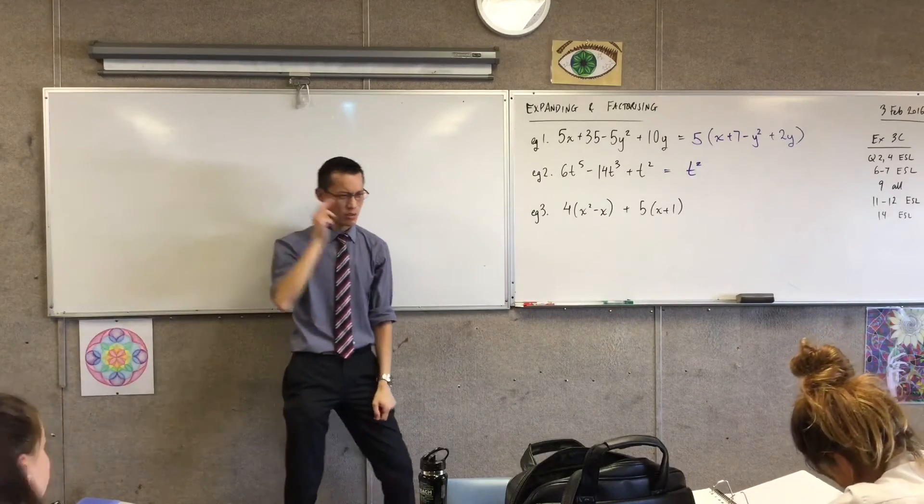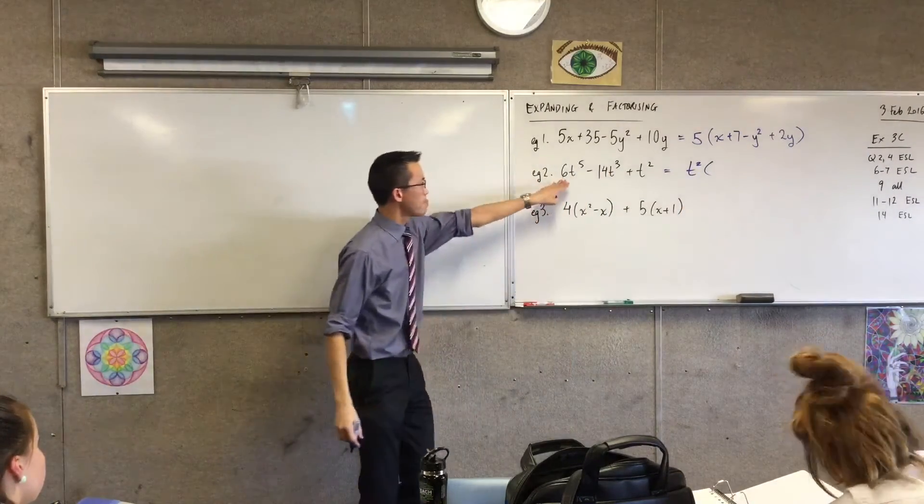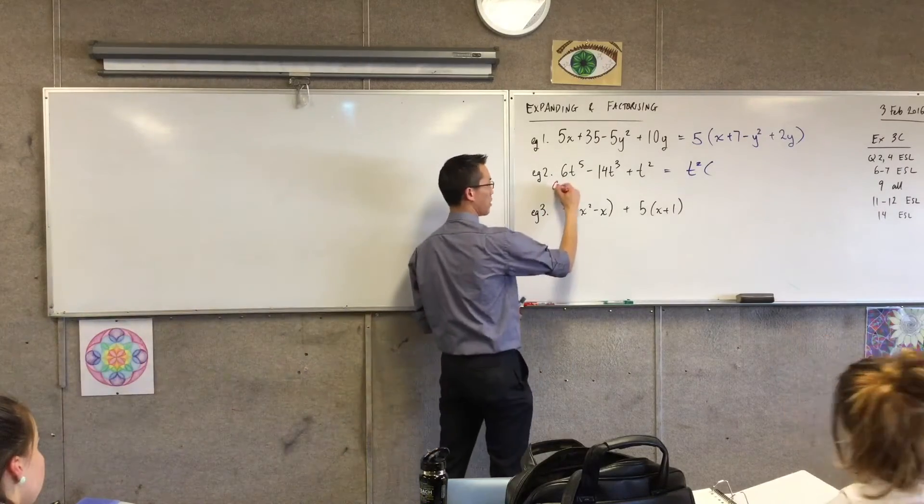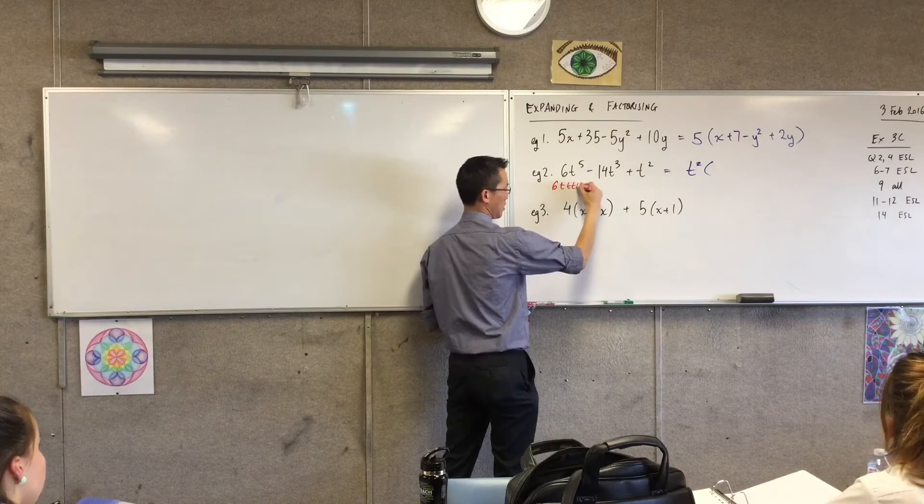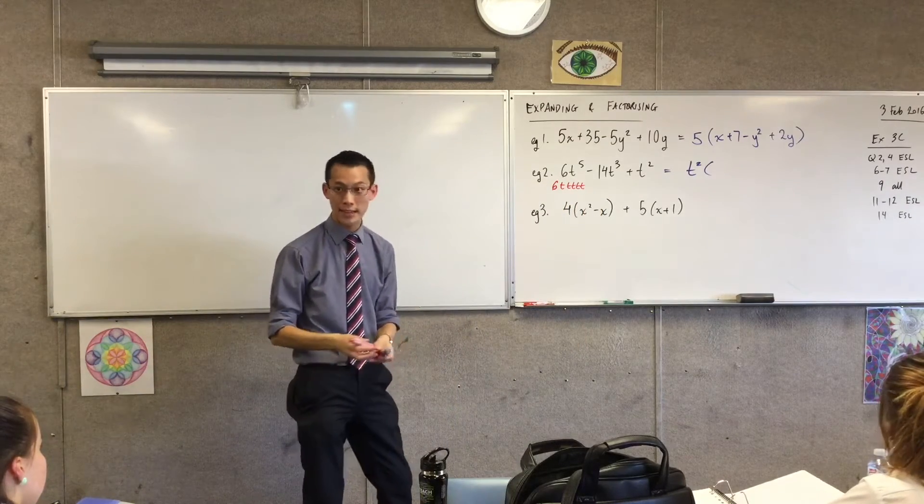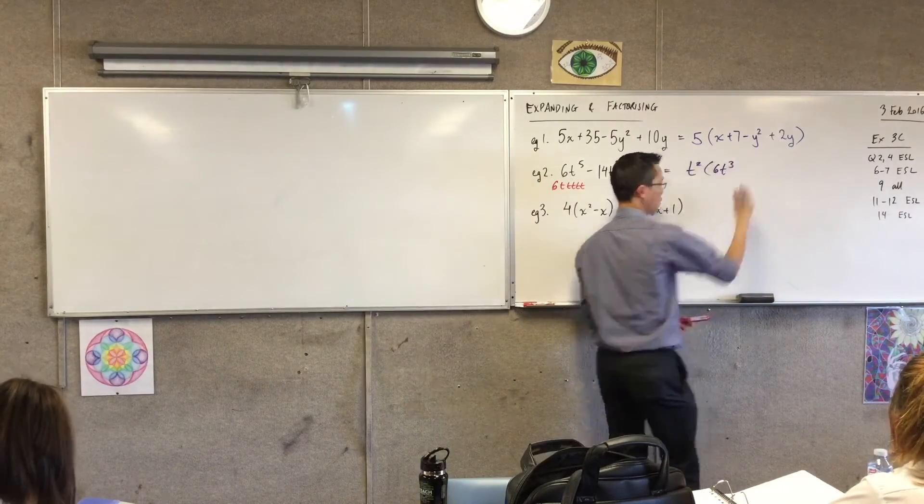So this is going to call on some of that index logic, and this is a bit tricky. We're doing a couple of skills at once. This is really - don't write this bit - but this is really shorthand as well. It's 6 T, T, T, T, T, right? 5 of them. So if I'm taking two out, how many are left? 3. Three of them. 6T³.